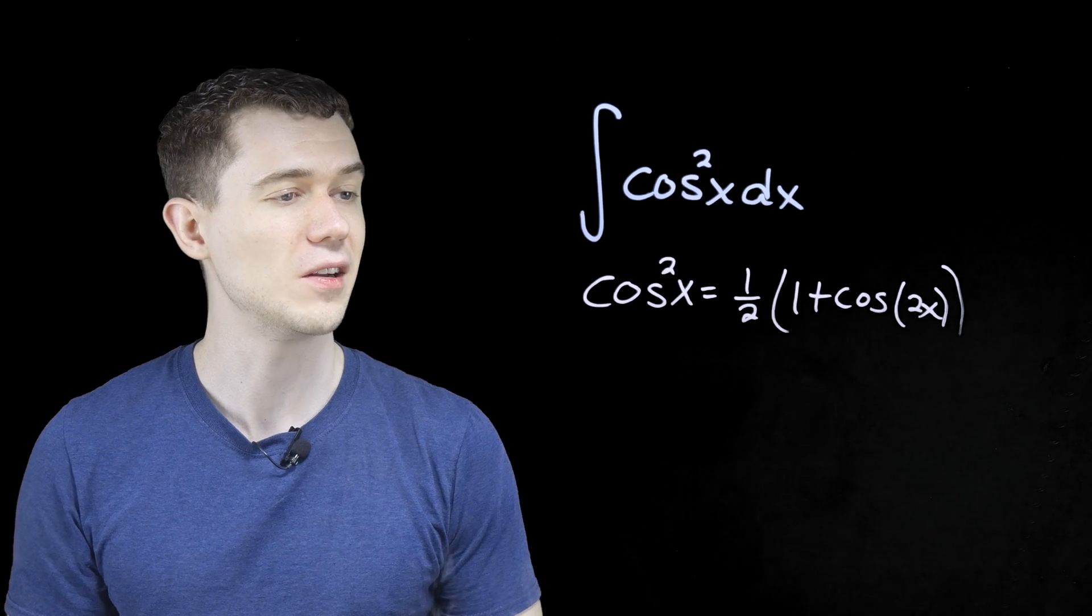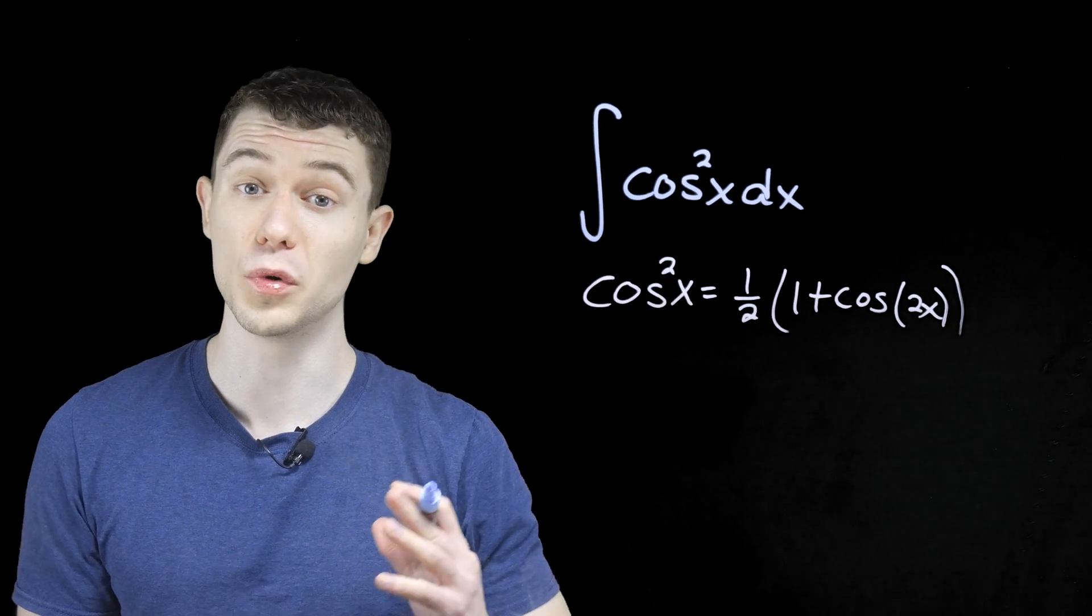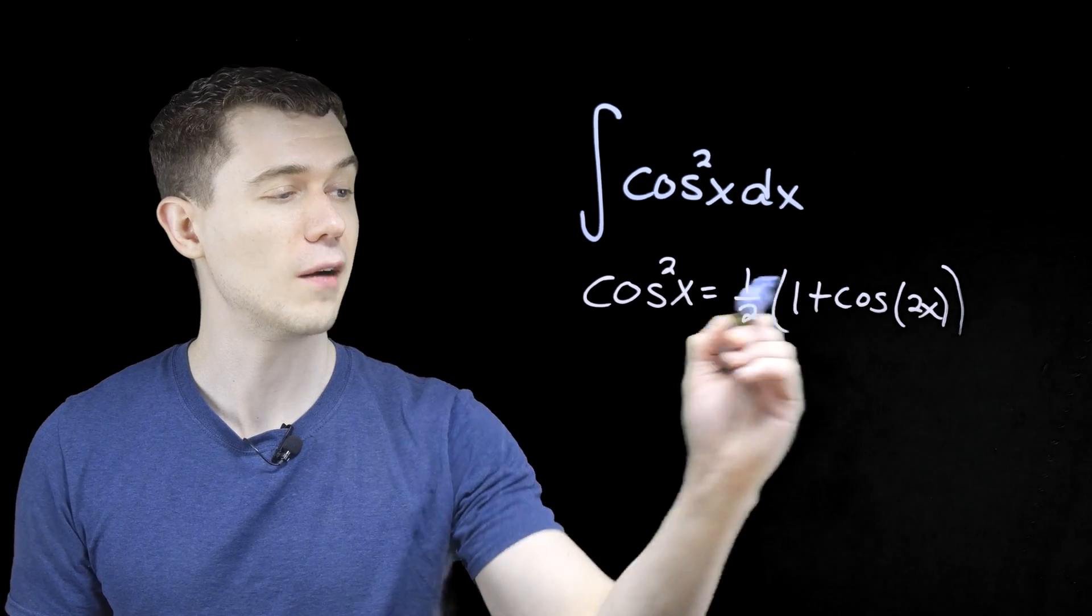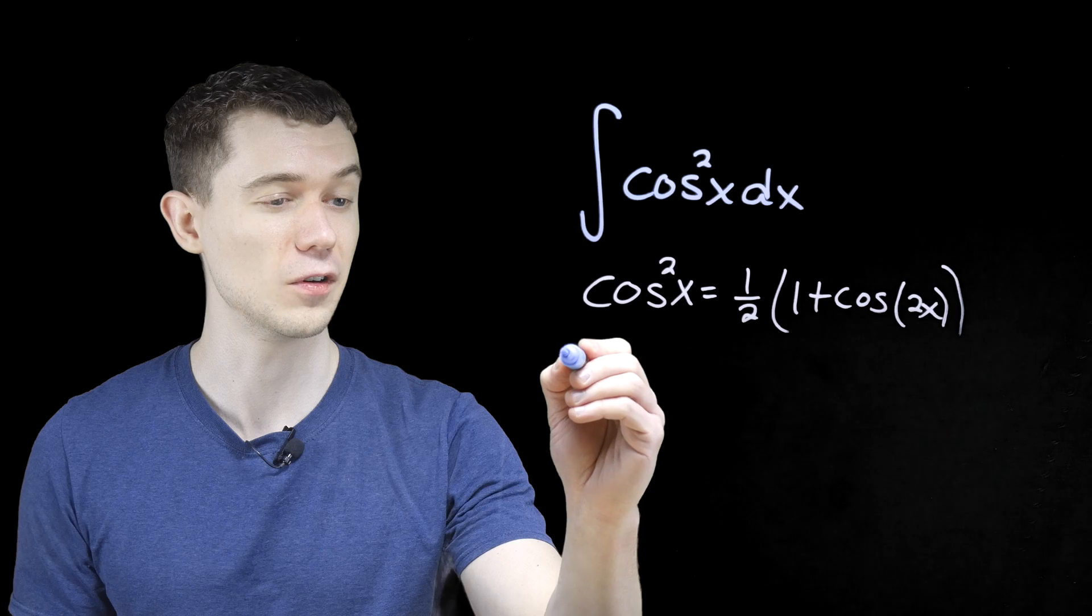And so what we're doing here is we're reducing this squared, which we don't really know how to integrate, to a first power. We can antiderive cosine to the first.